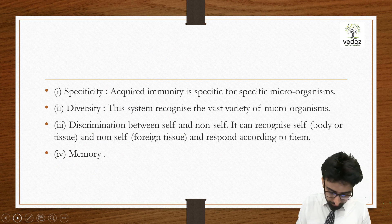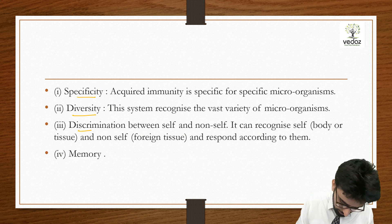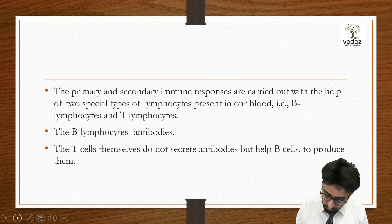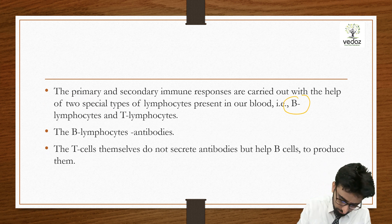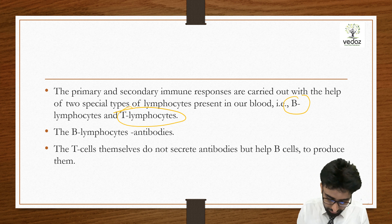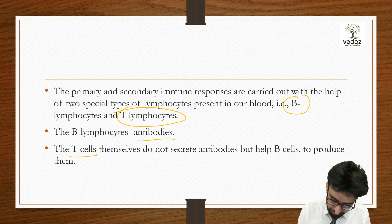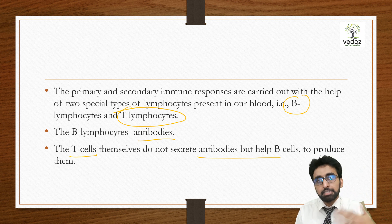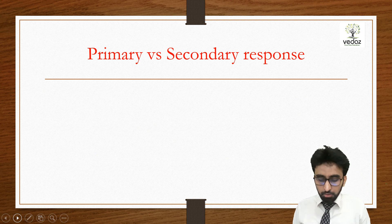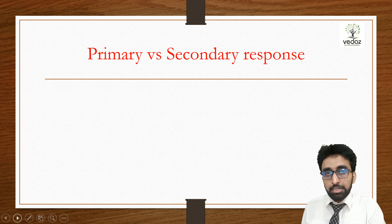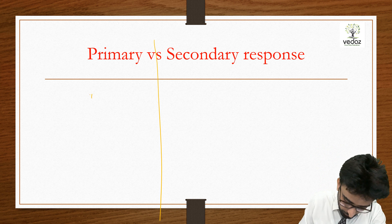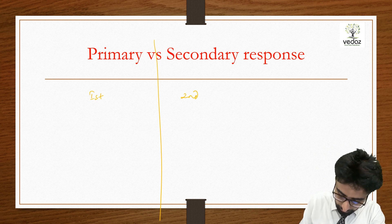So in summary, acquired immunity is specific, diverse, can discriminate between self and non-self, and has memory. B cells form antibodies and T cells are helpful in the formation of antibodies. Regarding primary and secondary response: primary response occurs after first exposure, secondary response after second exposure.